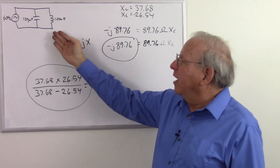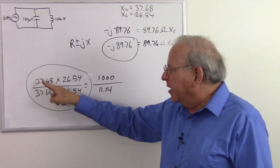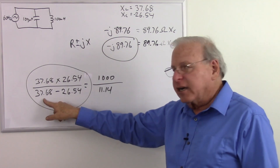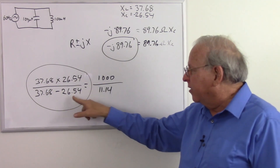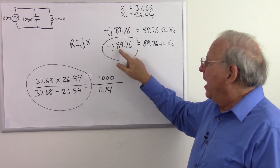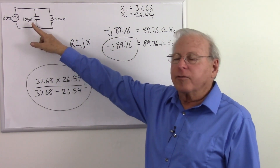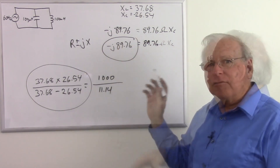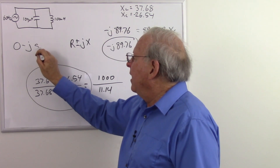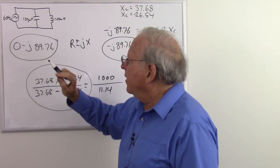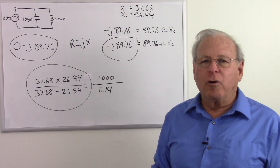Let's do a quick review. First, calculate your inductive reactance and your capacitive reactance. Once you have those, multiply inductive reactance times capacitive reactance, then divide by inductive reactance minus capacitive reactance. If the inductive reactance is bigger, that's a positive number — positive j. If the capacitive reactance is bigger, that's a negative number — minus j. So our actual impedance expressed in rectangular notation is 0 − j89.76, meaning 89.76 ohms of capacitive reactance.